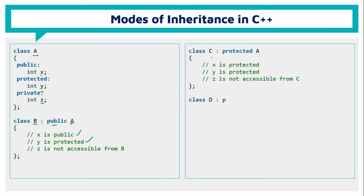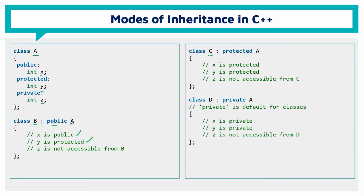Class C is a child class derived from class B using protected mode, so both x and y become protected. Class D derives from a class using private access mode, so both public and private members become private. You can access these through class D accordingly.